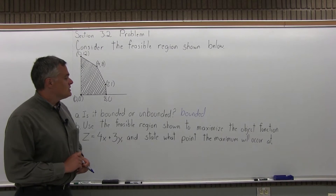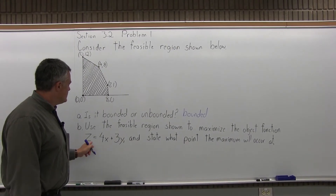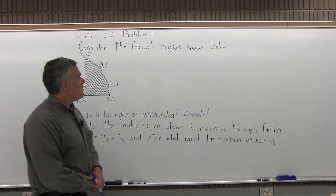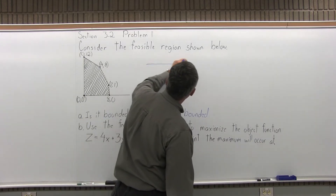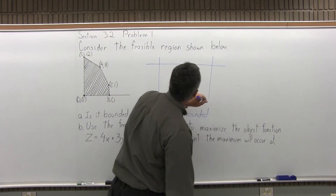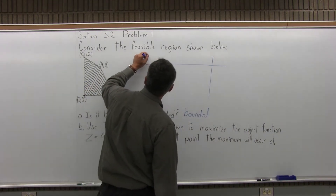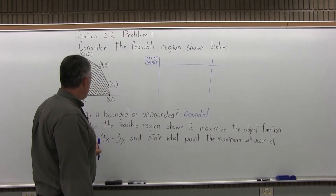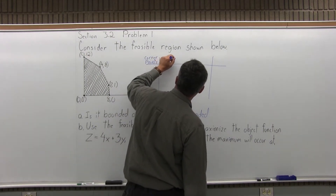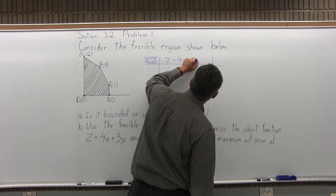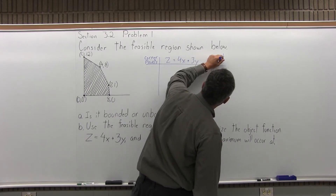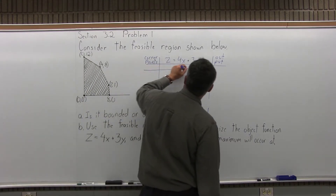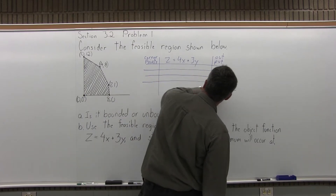Part B says, use the feasible region shown to maximize the object function z equals 4x plus 3y, and state what point the maximum will occur at. To answer this problem, I want to set up a little chart next to my graph of the feasible region. The chart will have three columns: the first column will list the corner points, the middle column will have the object function z equals 4x plus 3y, and the last column will be for output. We have 5 corner points, so my chart will have 5 rows.